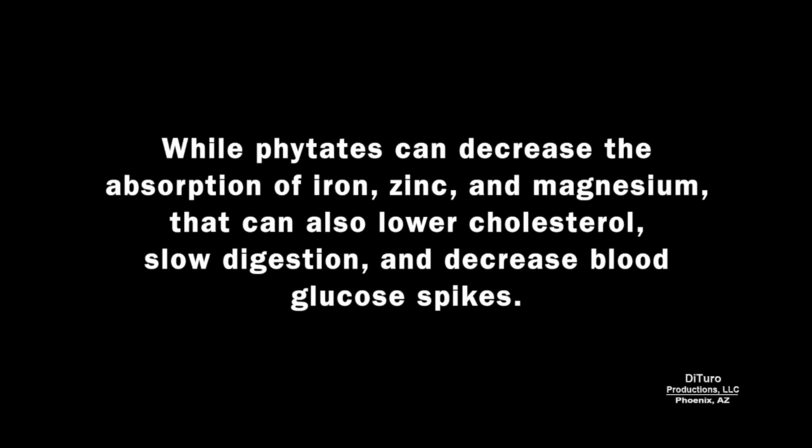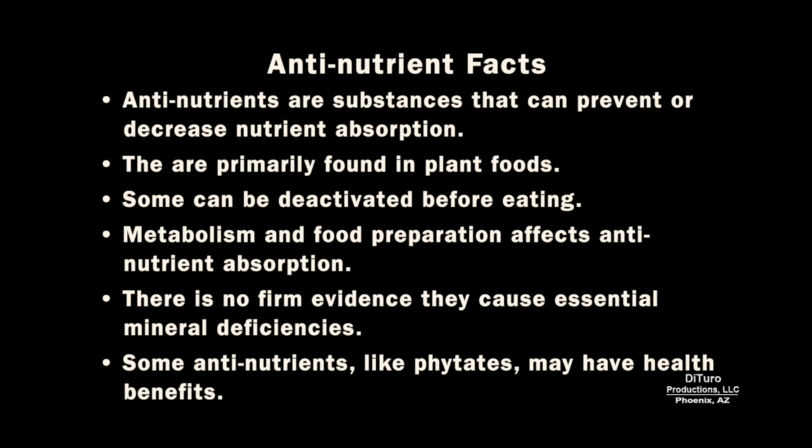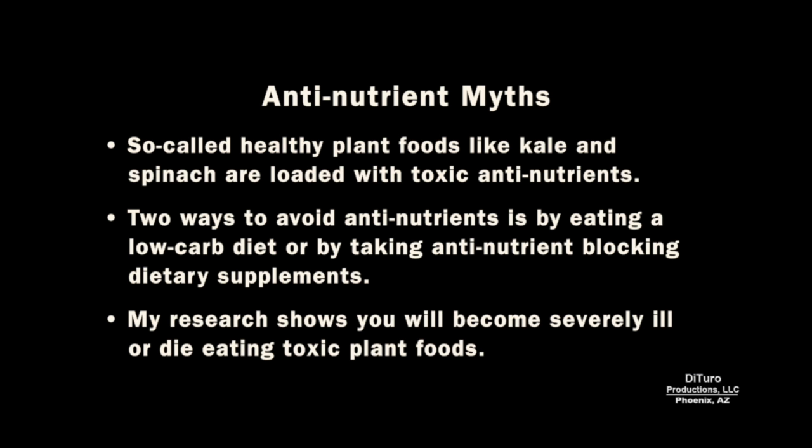The facts about anti-nutrients are: they are substances that can prevent or decrease nutrient absorption; they are primarily found in plant foods; some can be deactivated before eating; metabolism and food preparation affect anti-nutrient absorption; there is no firm evidence that they cause essential mineral deficiencies; and some anti-nutrients like phytates may have health benefits. Myths include that so-called healthy plant foods like kale and spinach are loaded with toxic anti-nutrients, that the only ways to avoid anti-nutrients are by eating a low-carb diet or taking anti-nutrient-blocking dietary supplements, and that you will become severely ill or die eating toxic plant foods.